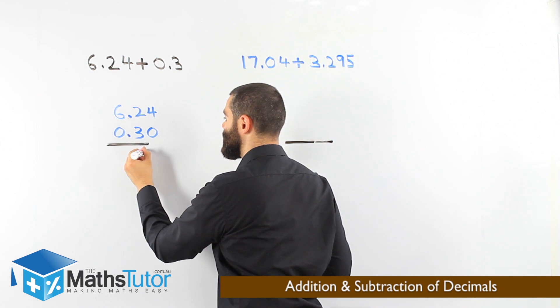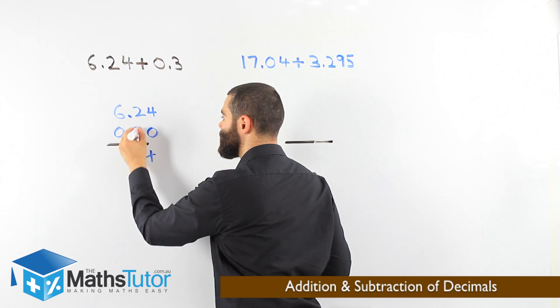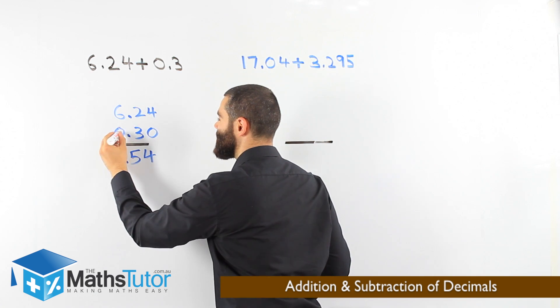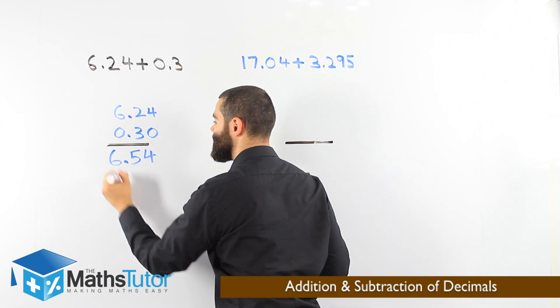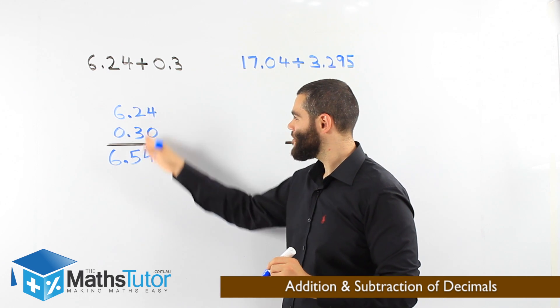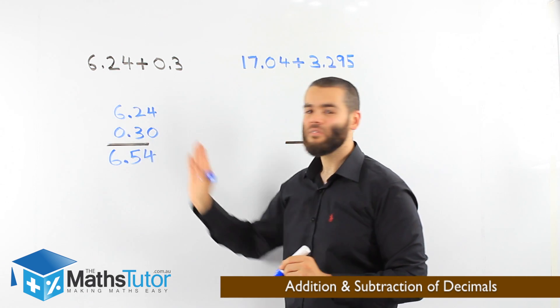4 plus 0 is 4. 2 plus 3 is 5. We put our point. 6 plus 0 is 6. 6.54. Once the alignment is correct, it becomes a very easy process.